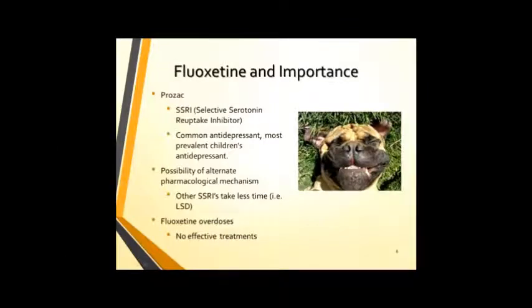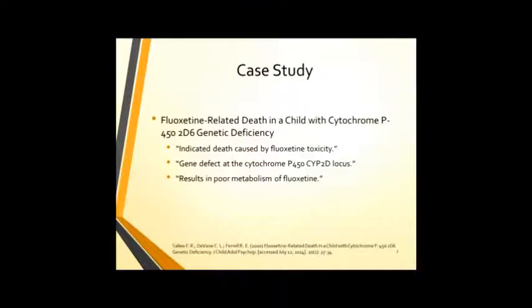Now for some more information about fluoxetine. Fluoxetine is also known as Prozac. It's an SSRI, one of the most common antidepressants prescribed today. It was number three, I believe, in 2010, and currently is the most commonly prescribed antidepressant in children. It's also prescribed to some pets for various reasons as well, hence the happy dog on the right-hand side of the screen. As previously demonstrated in Zanamajid's study, there is the possibility of an alternate pharmacological mechanism that we currently don't know about. This is bolstered by the fact that other SSRIs take less time to see effects, such as LSD. Another medical application of this study could be fluoxetine overdoses, which are a moderately common form of overdose. Currently, there are no effective treatments for these. Doctors are able to treat the symptoms, but not the actual mechanism of effect.